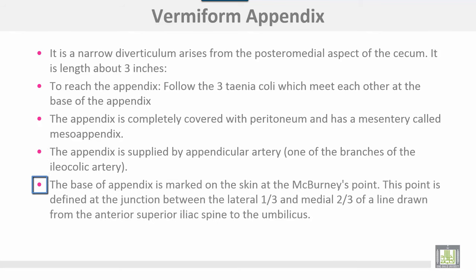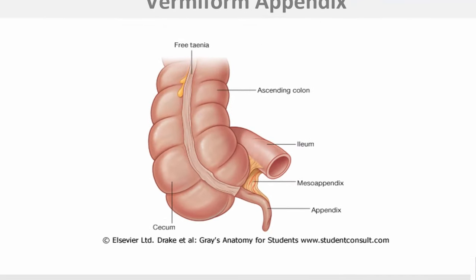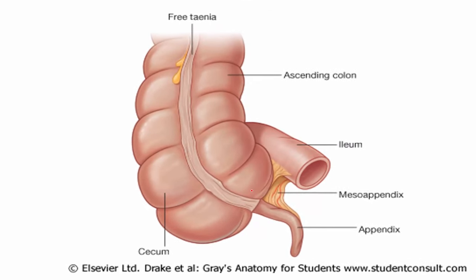The base of the appendix is marked on the skin at McBurney's point. This point is defined as the junction between the lateral one-third and the medial two-thirds of a line drawn from the anterior iliac spine to the umbilicus. This is the appendix arising from the posteromedial aspect of the cecum. This is the mesoappendix, and this shows the meeting of the taenia coli at the base of the appendix.